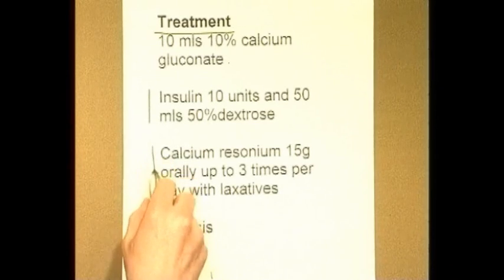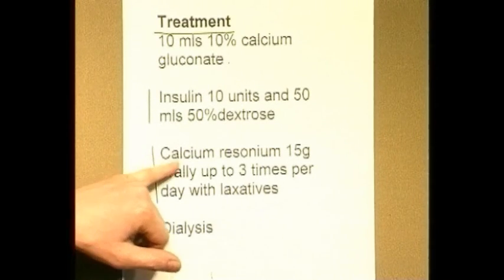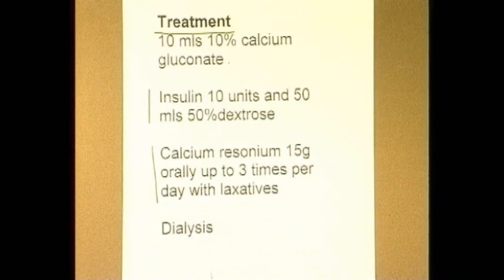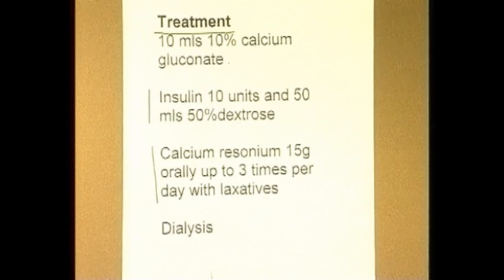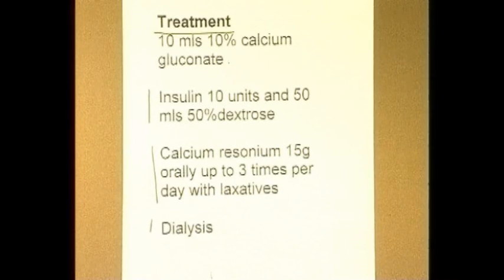The third approach uses calcium resonium — 15 grams orally up to three times per day with a laxative. Calcium resonium in the gut attracts potassium out of the capillaries and into the gut, and laxatives flush the potassium out. These are called ion exchange resins. Finally, as a last resort, hemodialysis or peritoneal dialysis can remove potassium from the body. It is important that if someone has very high potassium it is not dropped too quickly, as a rapid disturbance in balance can abnormally affect the myocardium.